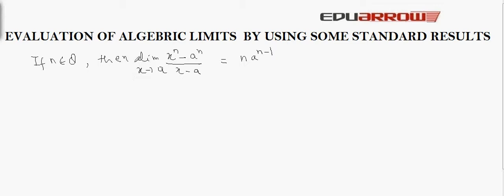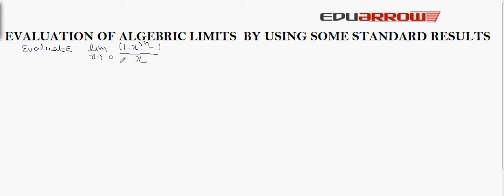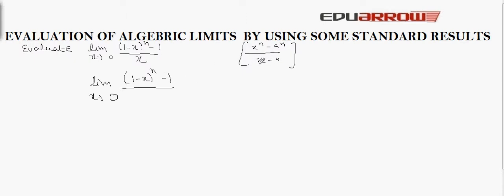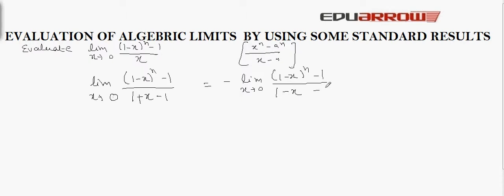Now let us see one example based on this. We have to evaluate the limit x tends to 0 of the given expression. As we can see, the expression is of the form (x^n − a^n) / (x − a). To reduce this expression to that form, note that x tends to 0, meaning a is 0, and the denominator has (1 − x). In order to get (1 − x) in the denominator, we can add and subtract 1, then take minus out as common, so the denominator becomes (1 − x − 1).